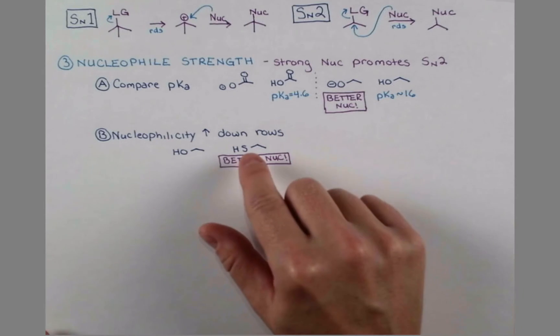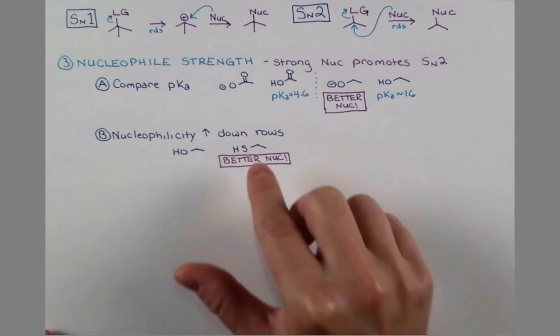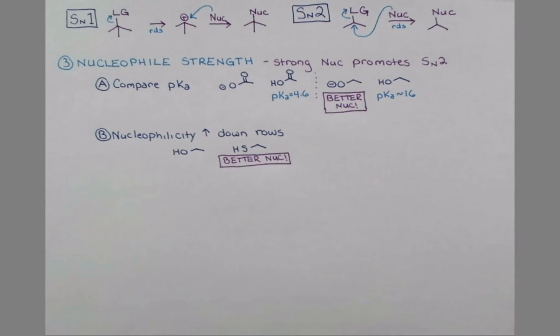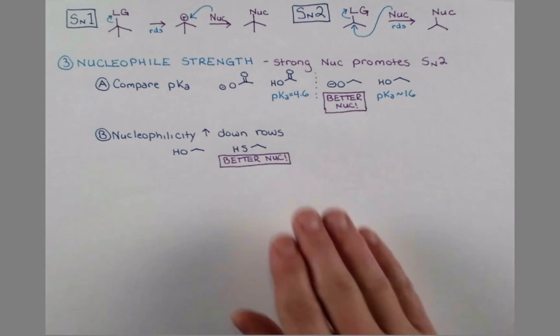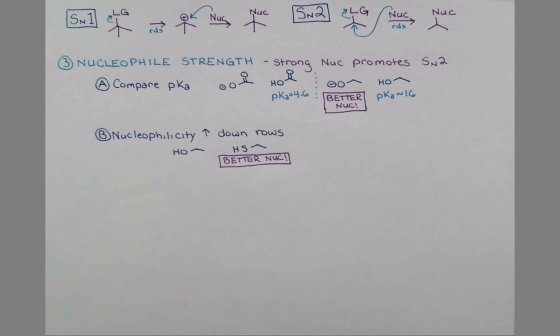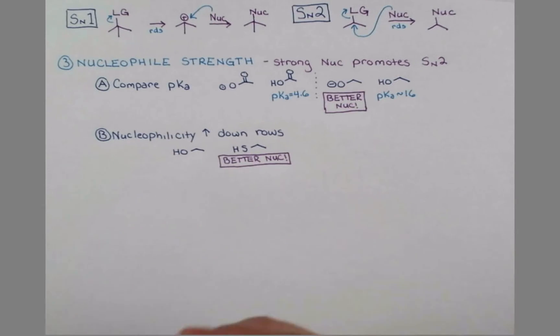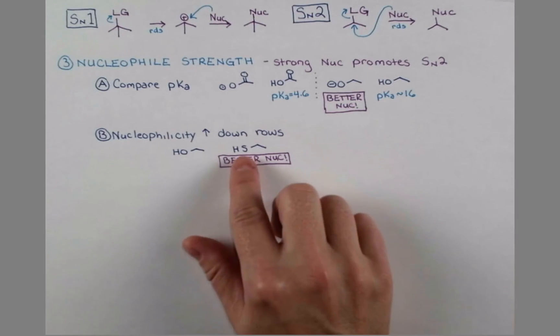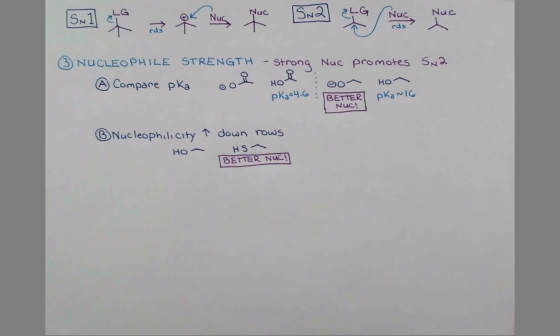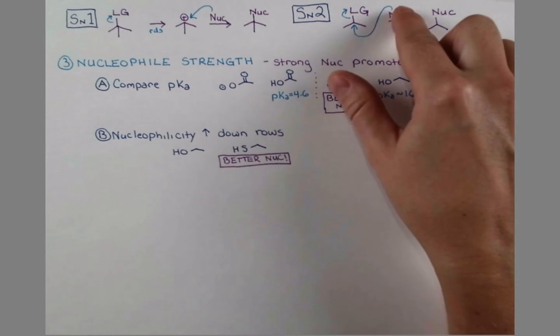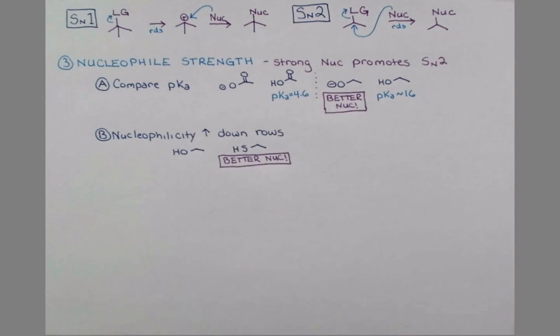This is because their electrons are further away from the nucleus. They're smeared over a larger surface area because this is a larger element. And so, whereas these electrons are going to be very close to the oxygen atom, sulfur's electrons are a little bit further away from the atom, and so it's easier for those electrons to distort as they make that new bond and displace the leaving group.